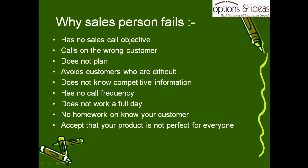Why does a salesperson fail? One reason is having no clear sales call objective — the salesperson doesn't know what they are doing. Second, calling on the wrong customer. Third, difficult customers are avoided. If you have a difficult customer, you should approach it and be able to handle it. Fourth, the salesperson does not know competitive information. If you don't know the competitive product, it will be difficult to sell.